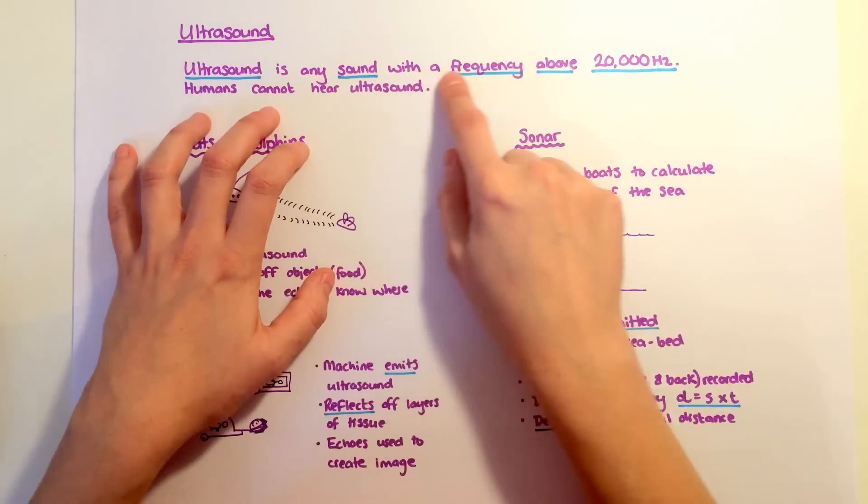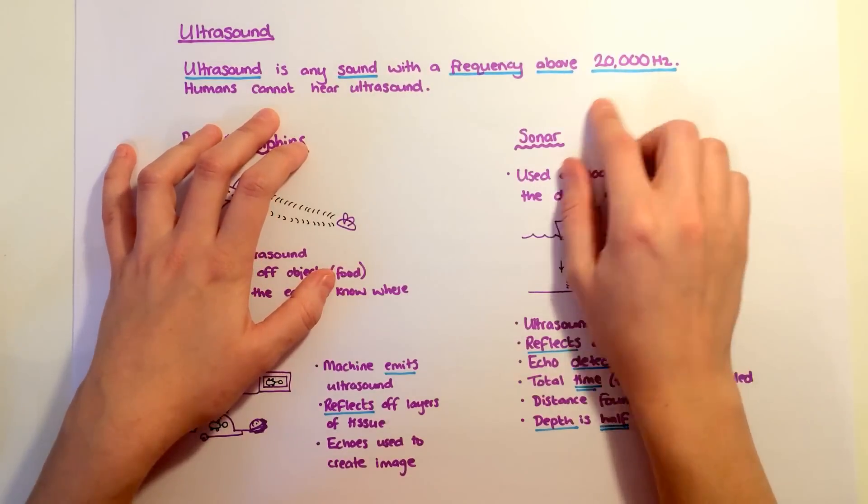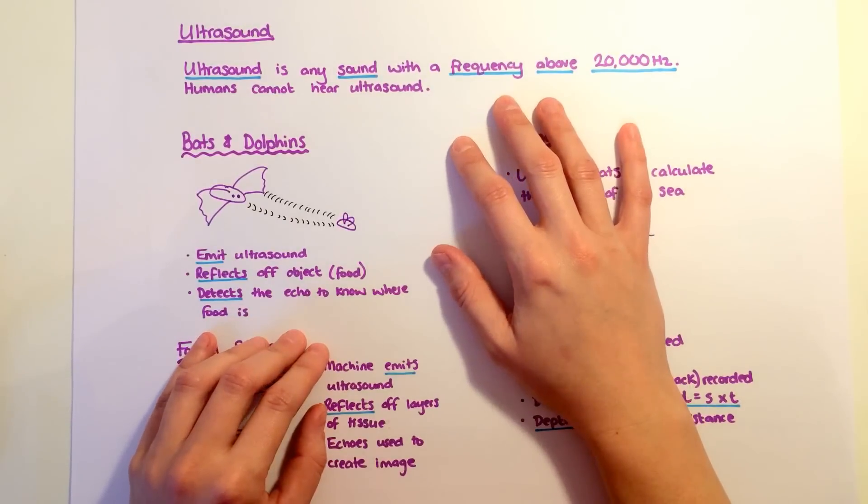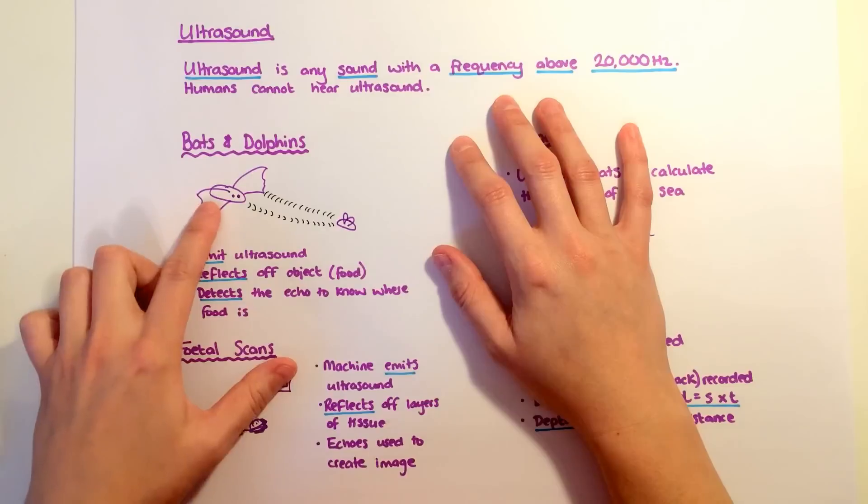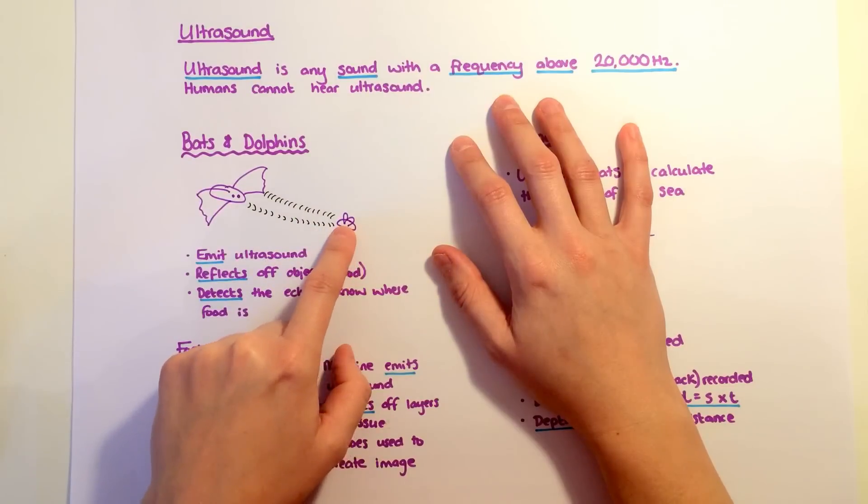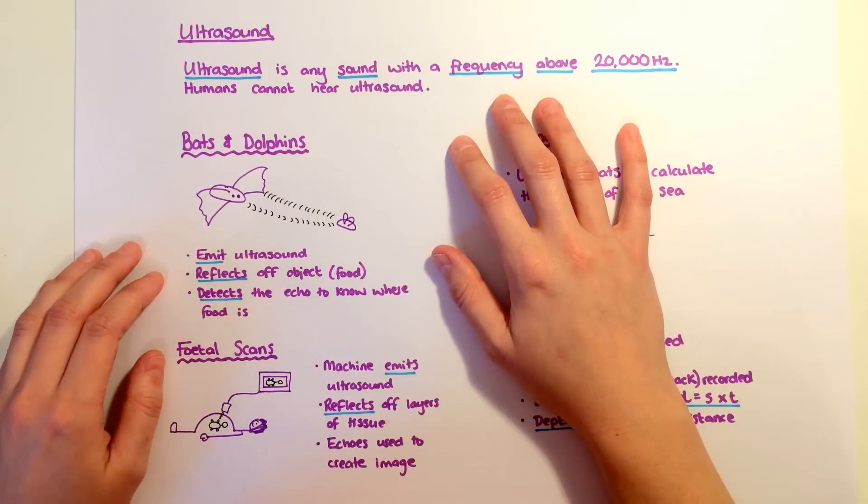Ultrasound is any sound too high for us to hear. It has a frequency above 20,000 hertz. Some animals like bats and dolphins communicate using ultrasound. Bats use it to find their food. They emit an ultrasound wave, it reflects off their food, they detect the echo and work out where their food is.